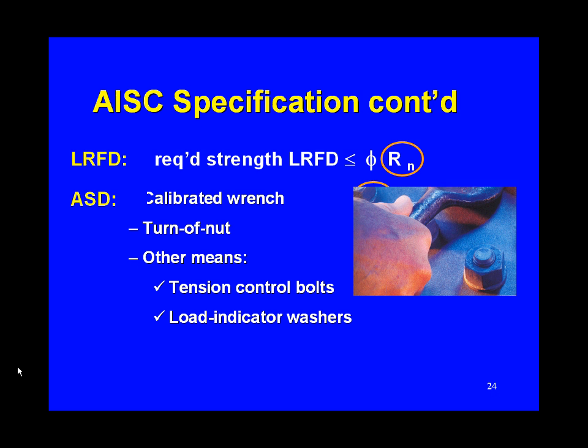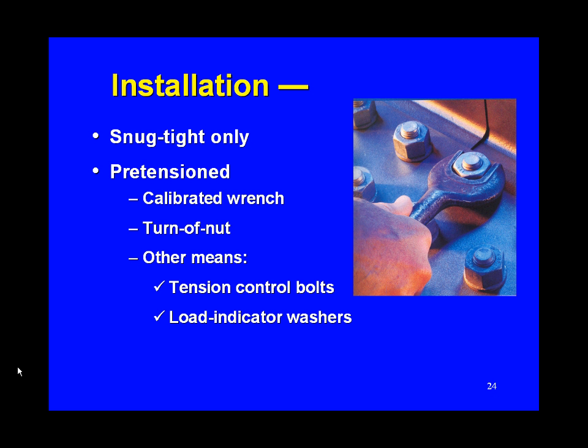Moving on to installation. Here's somebody with a spud wrench — a manual wrench about 15 inches long with a business head and a pointy end used for aligning holes when swinging parts into place. Snug tight means no particular pretension is required beyond holding things together. Or, if pretension is needed, it can be achieved by calibrated wrench, turn of nut, tension control bolts, or load indicator washers — we'll go through all of those.